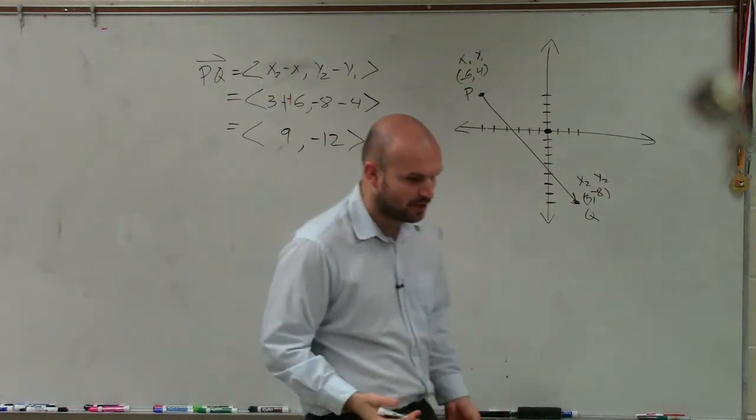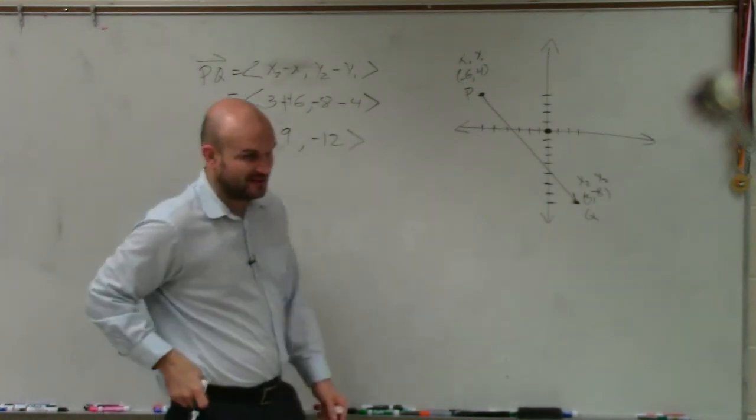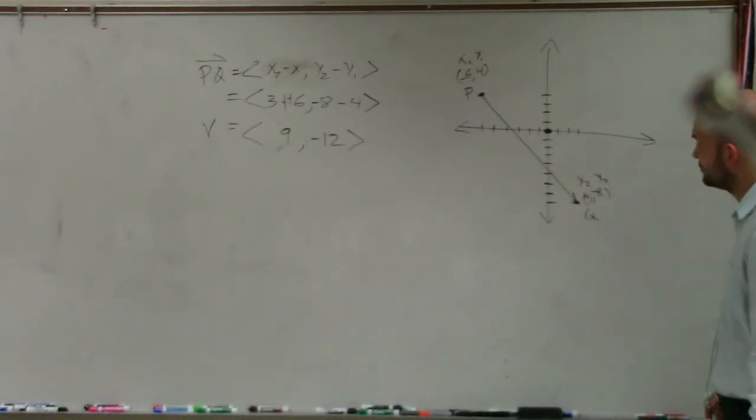Now when we write this component form, again, a lot of times we'll give them names. In this case, we're just going to call this vector v. So now let's go and plot what exactly this vector looks like.